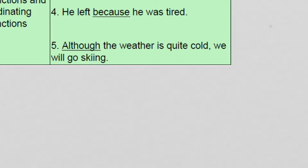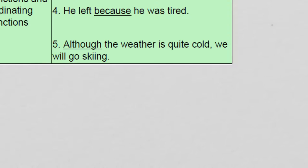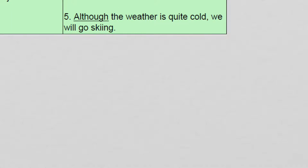In number four, the biggest thing to remember is when using the word 'because' — which gives a reason for something — the best way to use it is in the middle of the sentence. Example: 'He left because he was tired.' Number five: another pretty common subordinating conjunction is the word 'although.' Example: 'Although the weather is quite cold, we will go skiing.' I'll give more examples of 'although' later in the video.